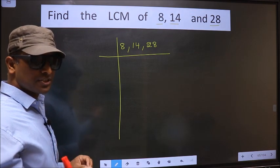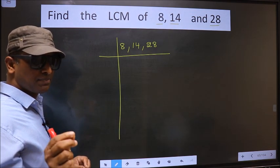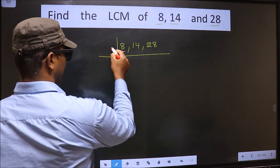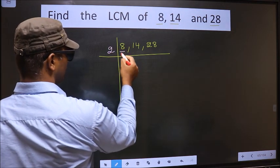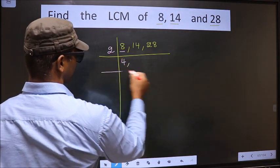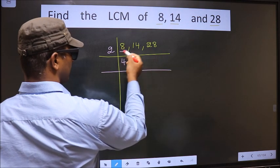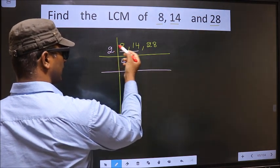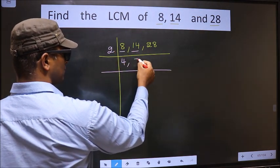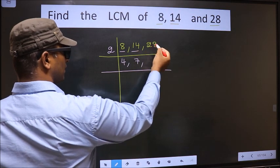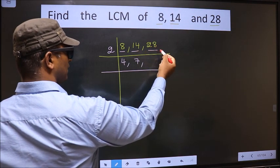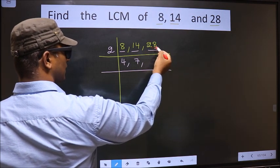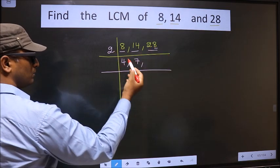Now, we should focus on the first number, that is 8. 8 is 2 fours, so 2 times 4 is 8. The other number 14 — when do we get 14 in the 2 table? 2 sevens are 14. The other number 28 — the last digit is 8, so this number is divisible by 2.